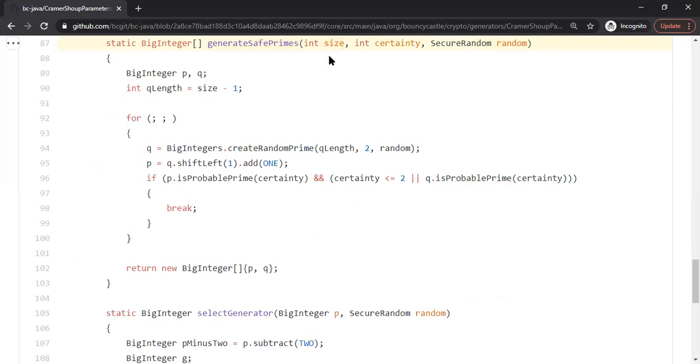Size is the bit size of the prime that you would like to have. Certainty you can imagine as some kind of a confidence number. Higher certainty means the generated primes are very likely to be prime. That's basically the rough statement. Secure random is the underlying random number that you would like to use to generate the safe prime.